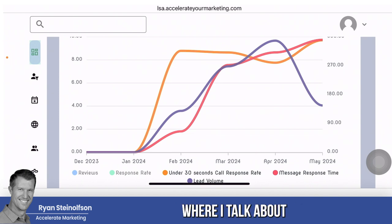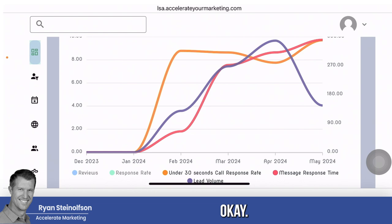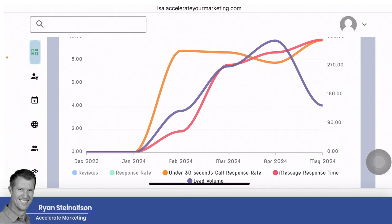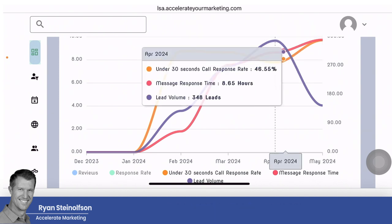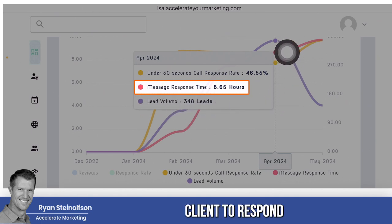I've created other videos where I talk about the messaging feature on local service ads being really the sleeper opportunity for anybody that's running local service ads. Why? Because the leads are half price, number one. Number two, especially if you have a great intake and you're leveraging the strategies I've talked about before — which is to use the Google local service ads app and have multiple people on that app — in order to respond to those message leads quickly. Unlike this client of ours: 8.65 hours was the average response rate for this client to respond to message leads.